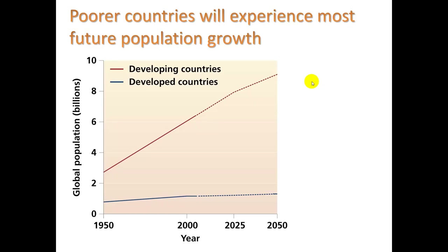So we know that poor countries will experience most of the future population growth — areas like Africa and South America. In fact, developed countries' rate is practically stabilized, whereas in developing countries, this is where we are right now. You can see that most of the current population, about 6 billion, are in developing countries.